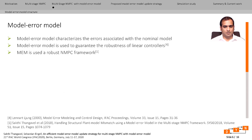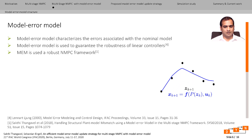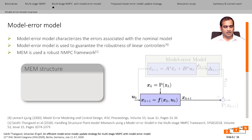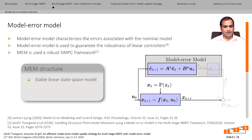The idea behind the model error model comes from linear robust control theory from the 1980s and 90s, where it was used to dynamically bound the uncertainty. It was used in a robust multi-stage NMPC framework for the first time in this paper. The model error model is used to capture structural uncertainties and can be built using observed measurements. In the figure, the black dots represent the plant measurements, the blue line represents the model predictions, and the pink shaded region represents the uncertainty described by the model error model, which tightly captures the observed uncertainty.